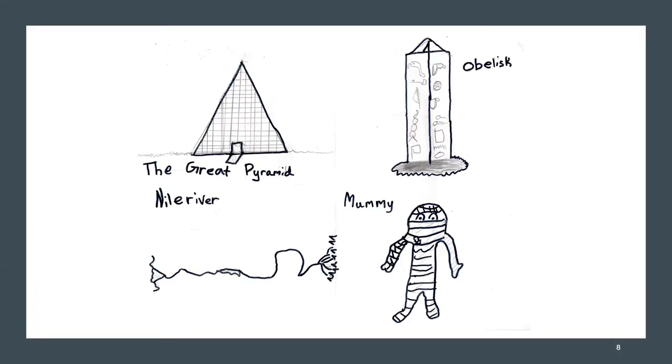These are my Ancient Egyptian Draws. The Great Pyramid, an Obelisk. An Obelisk is a tall monument-looking statue, and they carve hieroglyphics onto it and it helps them tell time. The Nile River and the Mummy.